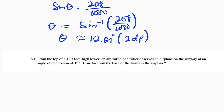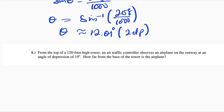Now let us move on to question number eight, and this is our last question. From the top of a 120-foot high tower, an air traffic controller observes an aeroplane on the runway at an angle of depression of 19 degrees. How far from the base of the tower is the aeroplane?